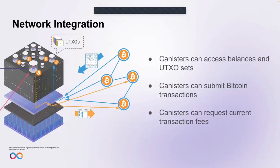Through the protocol-level integration, the Internet Computer can obtain Bitcoin blocks directly from the Bitcoin network and process contained transactions, allowing it to maintain the full Bitcoin UTXO set on-chain. Canisters can run queries against the full Bitcoin UTXO set, allowing them to know the balance of any Bitcoin address including their own. The Internet Computer can also submit signed transactions directly to Bitcoin network nodes without any need for intermediaries, and canisters can also request current transaction fees.